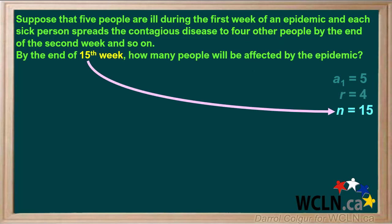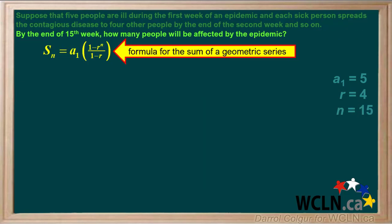We're asked for the number of people affected by the disease by the end of the 15th week, so the number of terms N is 15. We want to find the total number of people affected by the epidemic by the end of the 15th week, so we'll start by writing down the formula for the sum of a geometric series.